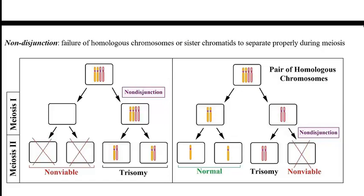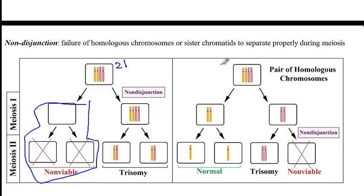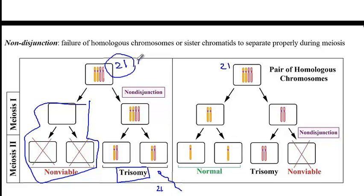There could be two types of non-disjunction. The first happens during meiosis one. Two cells that have no chromosome 21 at all — those gametes will not survive. However, the other two gametes will have two copies. Once this egg combines with a sperm that has another chromosome 21, the combination would be one chromosome from male and two from female — a trisomy. As a consequence, these progenies will have three copies of chromosome 21, that is Down syndrome.